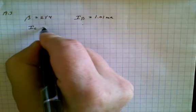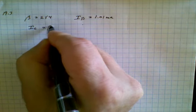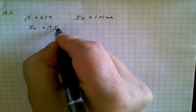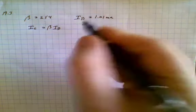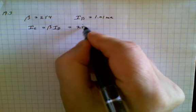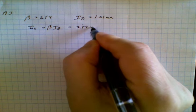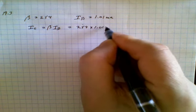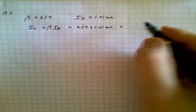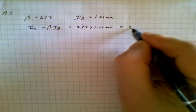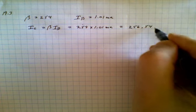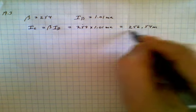The collector current is simply equal to beta, the DC gain, times IB. So we have all those numbers available to us. It's simply 254 times 1.01 milliamps, and that equals 256.54 milliamps.